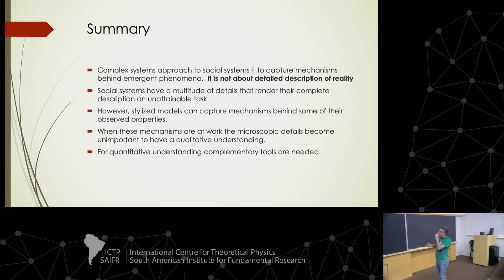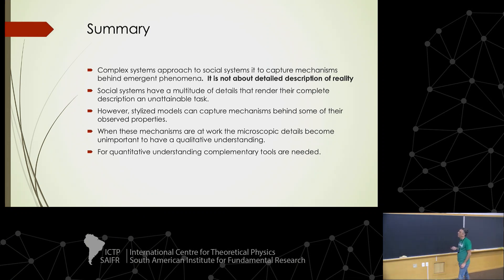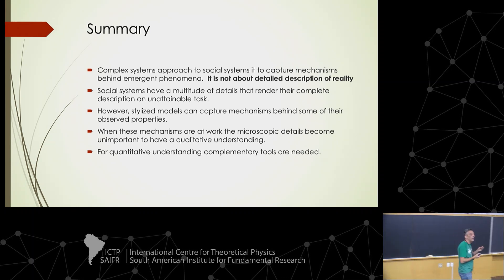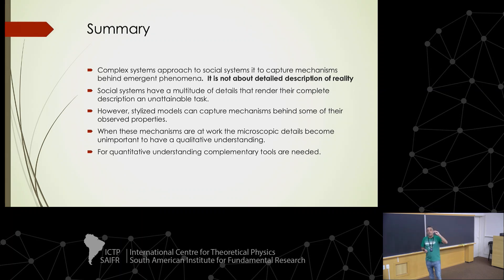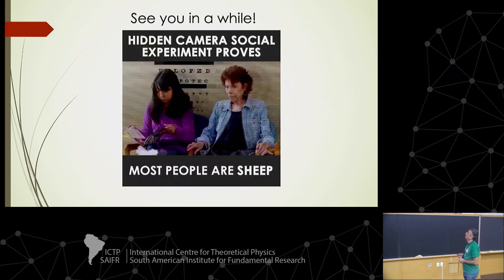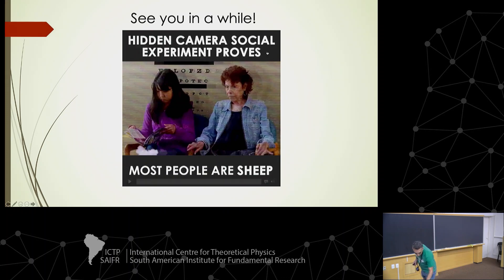Summary: the modeling of complex systems using simple models could be a very good approach if we know how to choose the few important variables. The election of the important variables is the art of modeling in terms of simple models. This is a preview of what we are going to see in the next class. I finished now — if you have any questions...